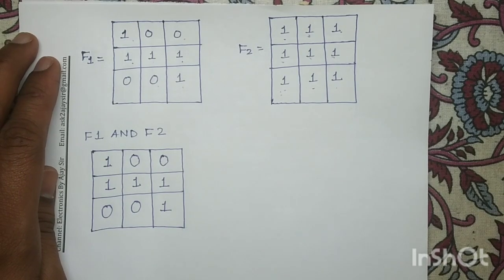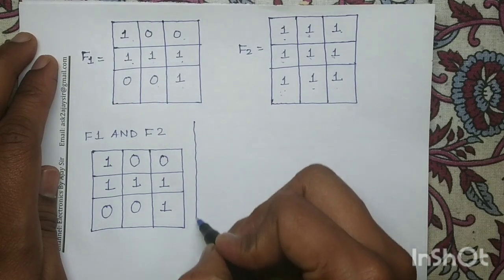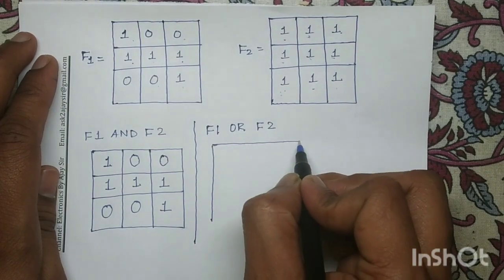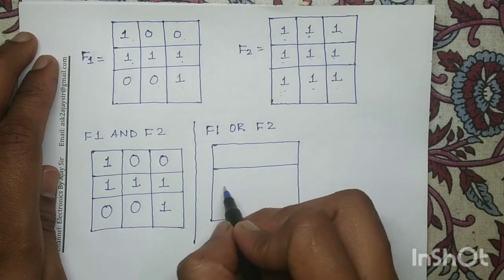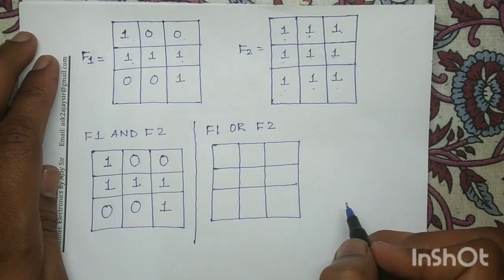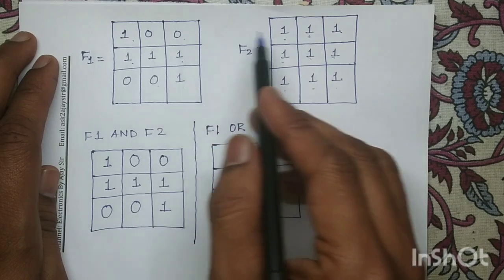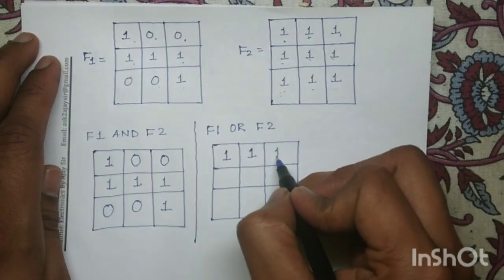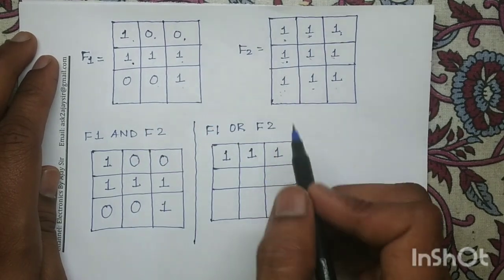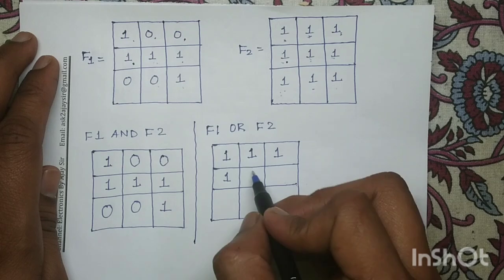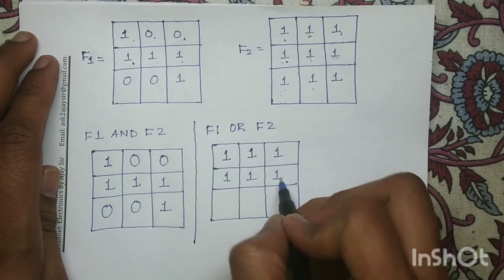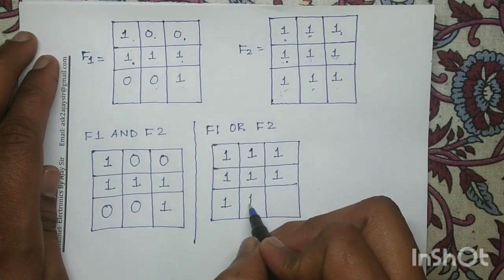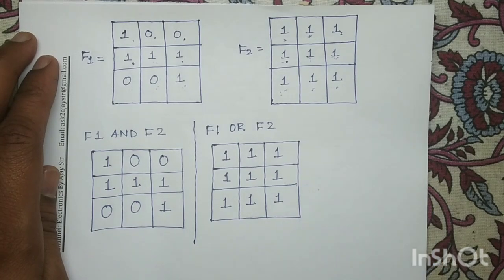Next we will perform F1 OR F2 — the logical OR operation between F1 and F2. Again the dimension of the output image is 3x3 and we will perform the bitwise OR operation. 1 OR 1 gives 1. 0 OR 1 gives 1. 0 OR 1 gives 1. Similarly in the next rows: 1 OR 1 gives 1 for all elements. 0 OR 1 gives 1, and 1 OR 1 gives 1.